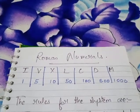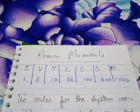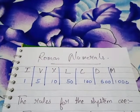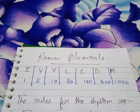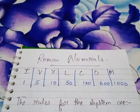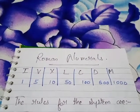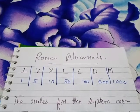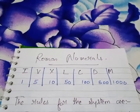The rules for the system are mentioned below. Following those rules, we have to solve the Roman numerals. I'll explain all the rules one by one. Then the questions you have to do on your own.